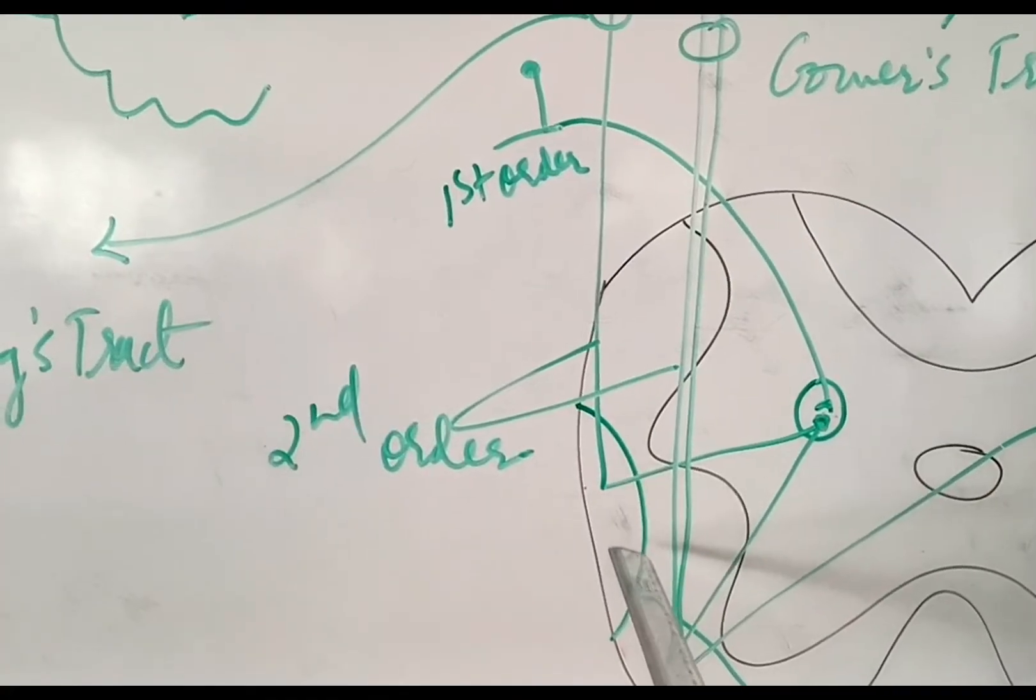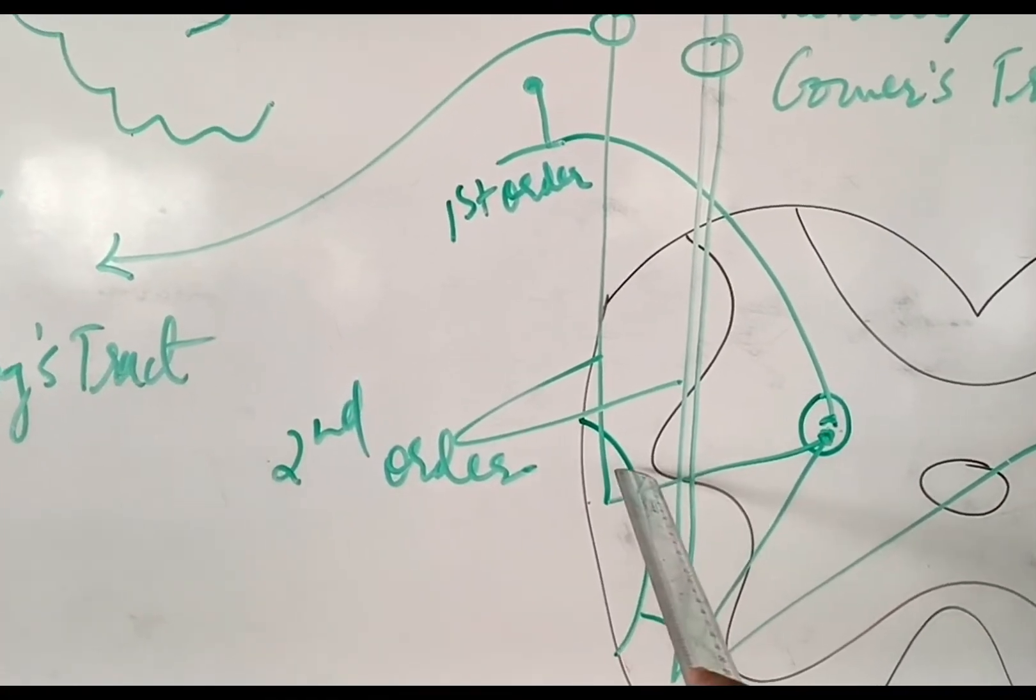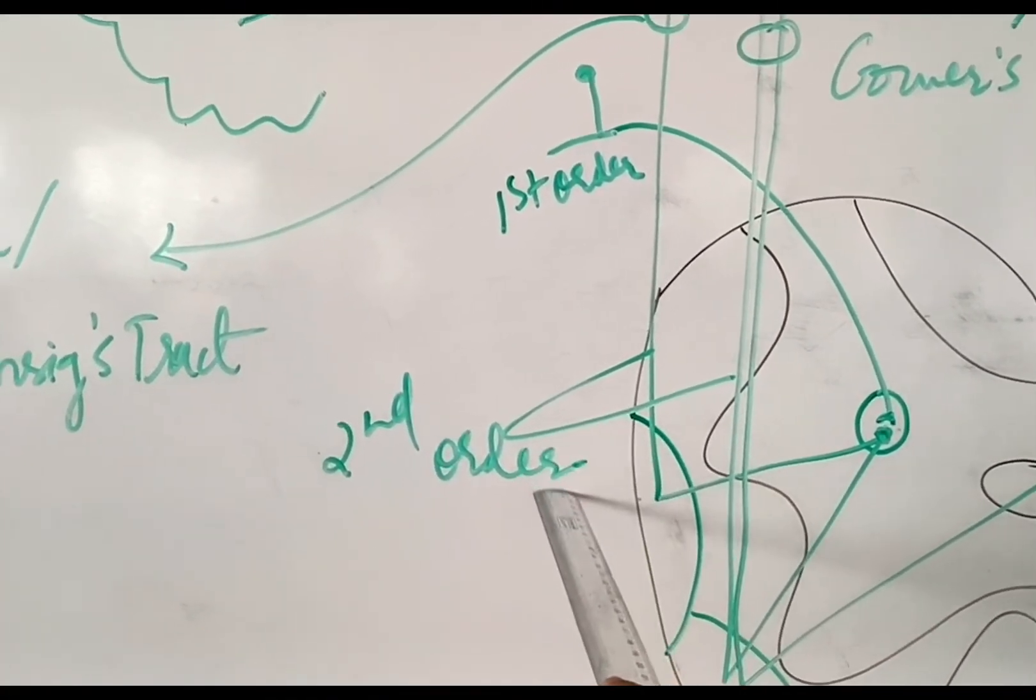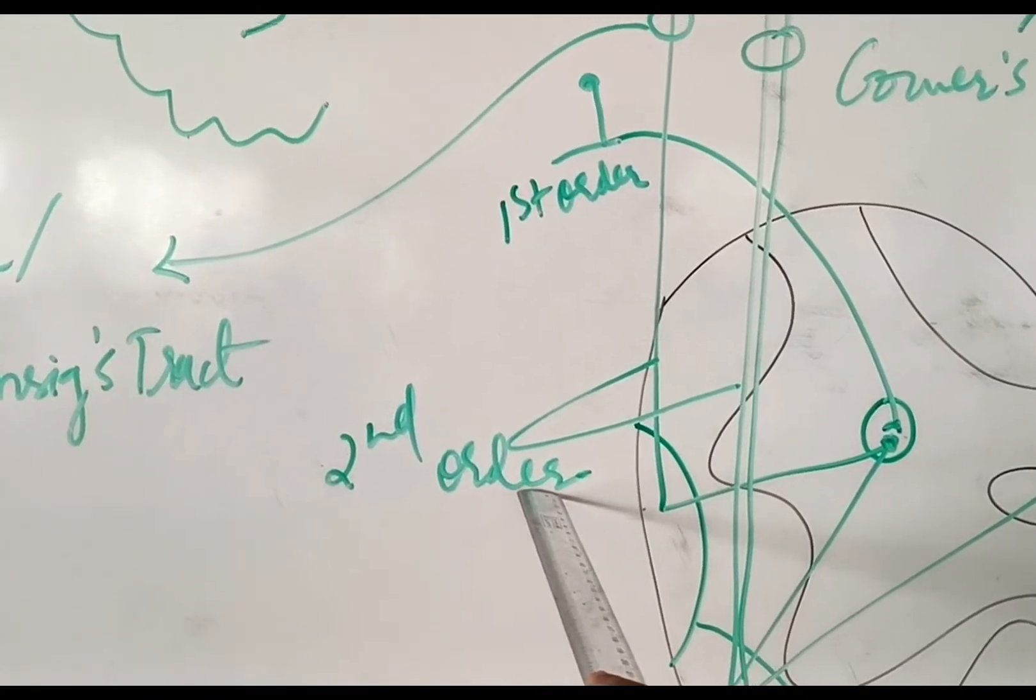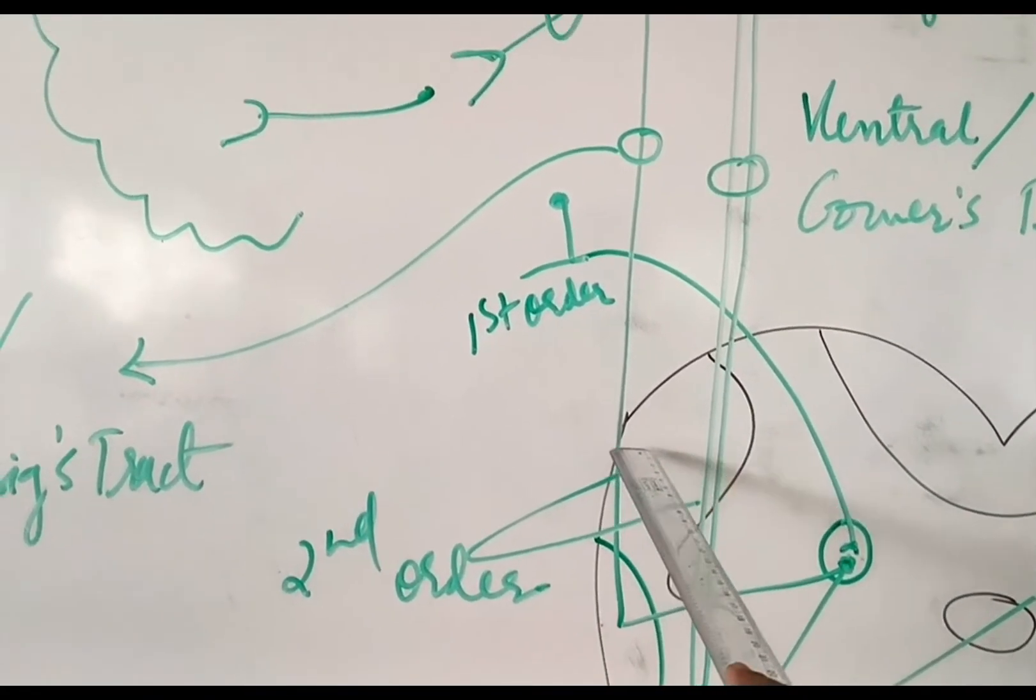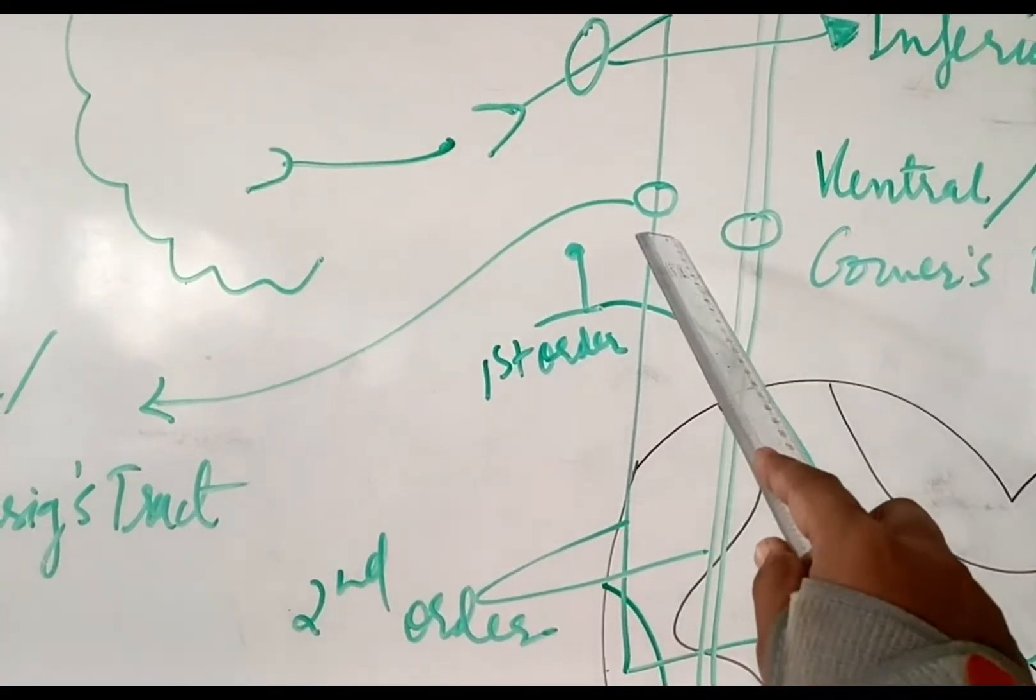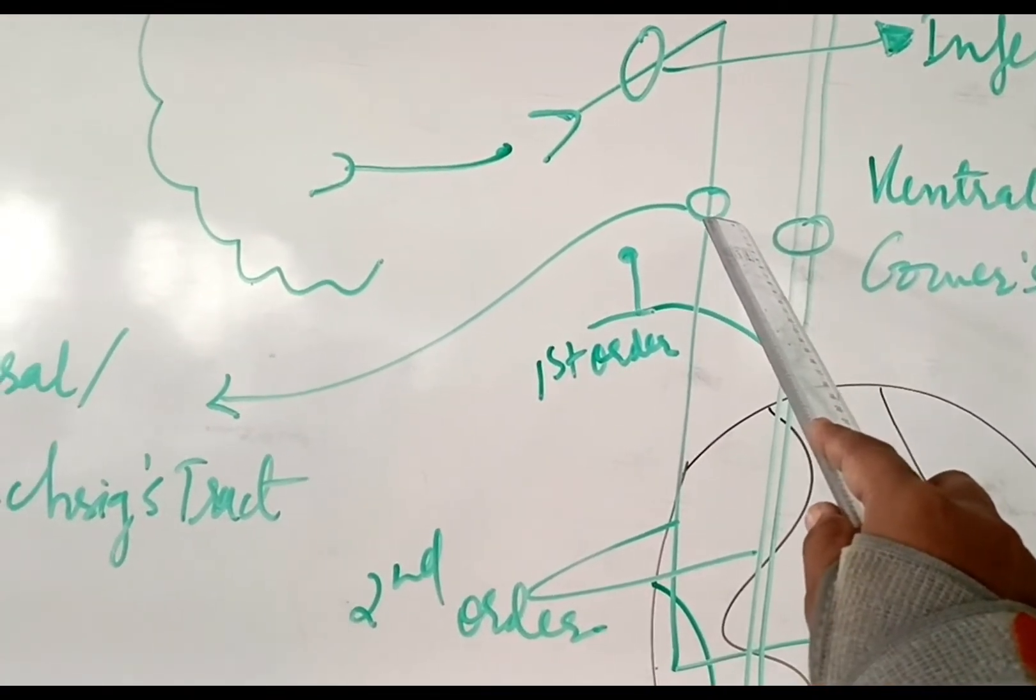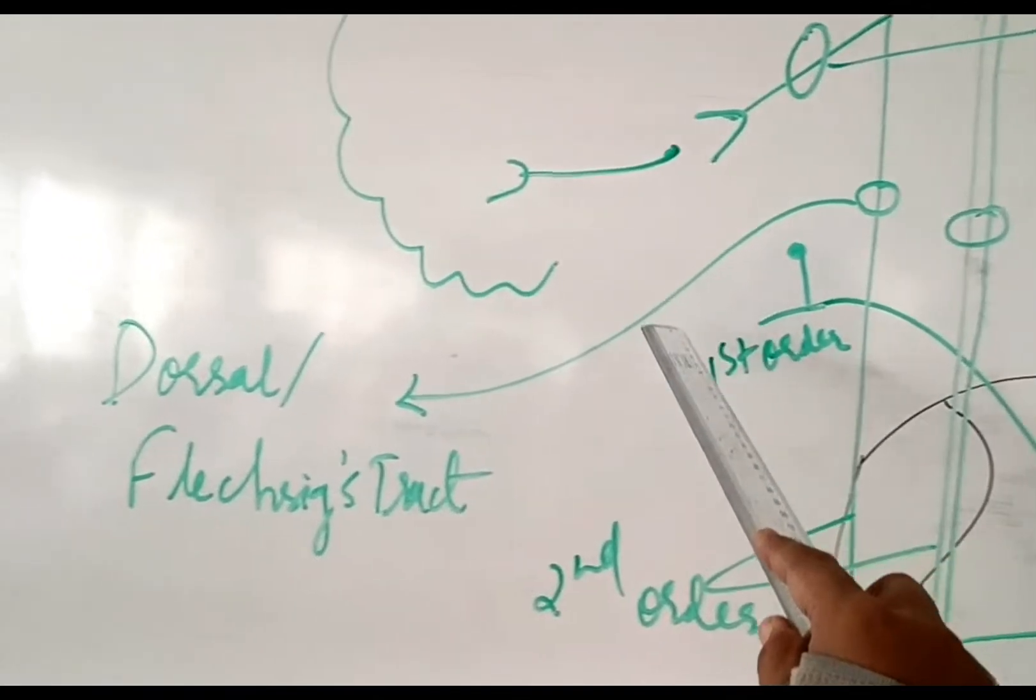This tract here forms the second order of neuron. Now from here, it occupies the lateral and dorsal aspect of the spinal cord. It ascends upwards. The tract is known as Flechsig's tract or the dorsal spinocerebellar tract, as you can see here.